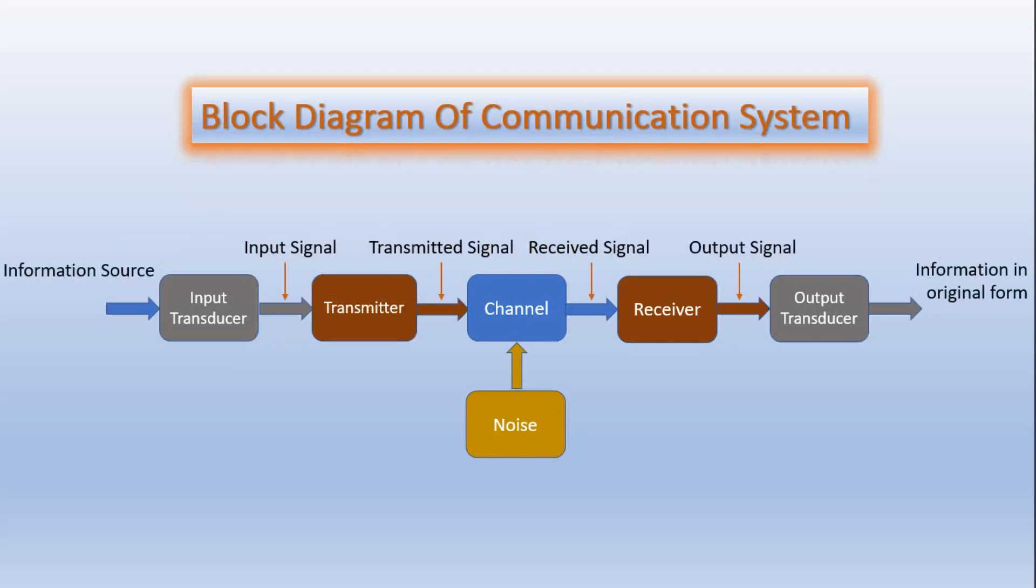At the receiver, the received signal is demodulated and after proper amplification, this signal is given to the output transducer. This is the basic block diagram of the communication system and a brief discussion on how the message is transmitted with help of this block diagram.